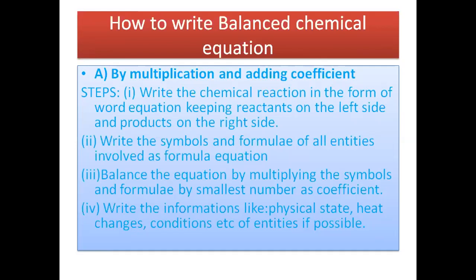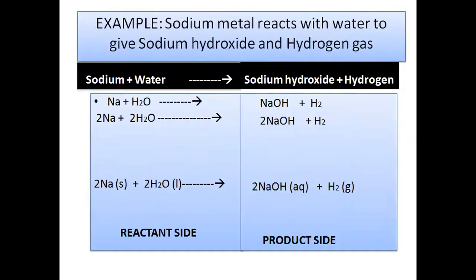Fourth, write information like physical state, heat changes, and conditions of entities if possible. We will take one example: sodium metal reacting with water to give sodium hydroxide and hydrogen gas. This can be written as a word equation: sodium plus water gives sodium hydroxide plus hydrogen. Reactants are on the left side, products on the right, separated by an arrow.